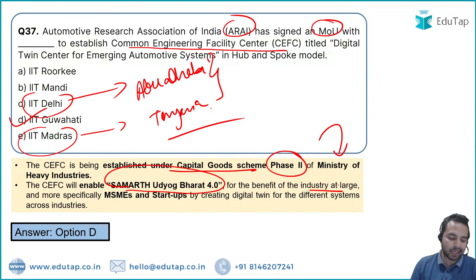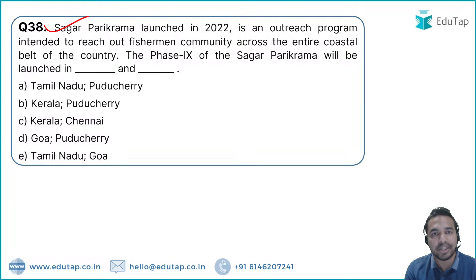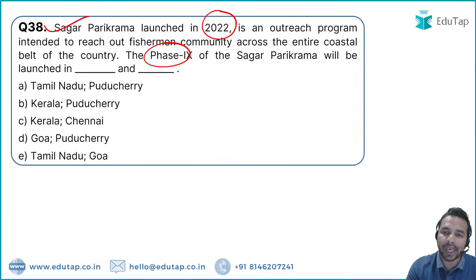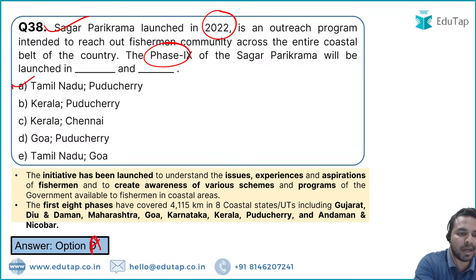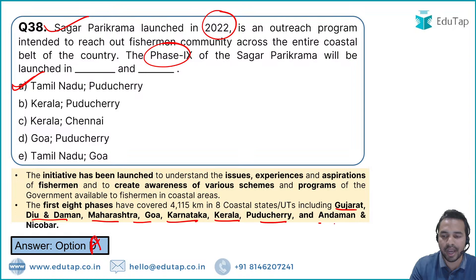Question 41: Sagar Parikrama is a Government of India program launched in 2022 to understand the issues of the fishing community. Phase 9 was recently launched in Tamil Nadu and Puducherry — Option A. The first 8 phases covered Gujarat, Diu & Daman, Maharashtra, Goa, Karnataka, Kerala, Puducherry, and Andaman & Nicobar.